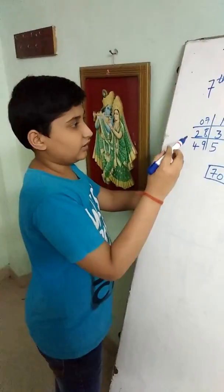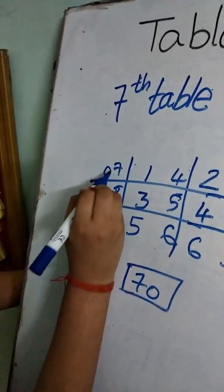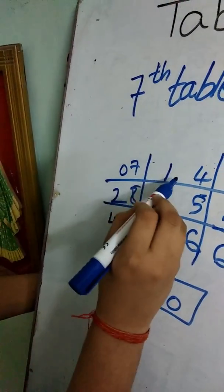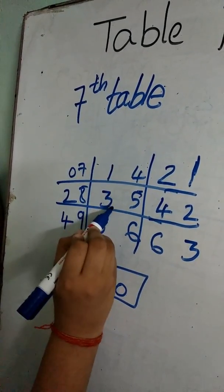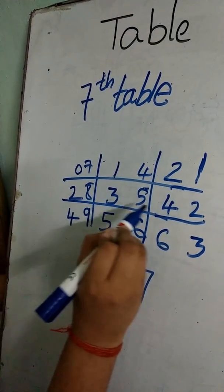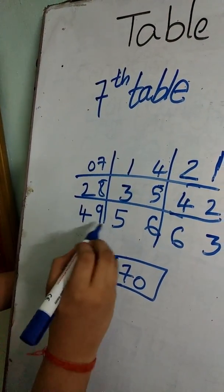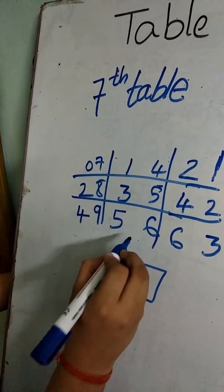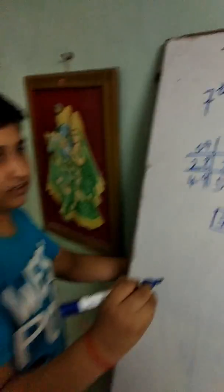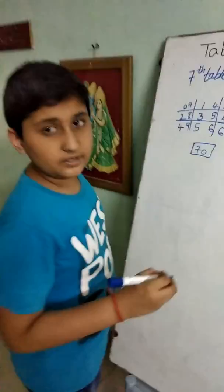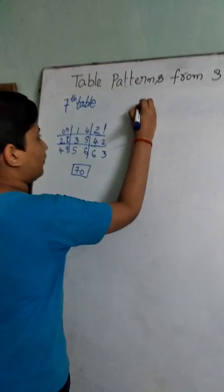This is the 7th table: 7 ones are 7, 7 twos are 14, 7 threes are 21, 7 fours are 28, 7 fives are 35, 7 sixes are 42, 7 sevens are 49, 7 eights are 56, 7 nines are 63, 7 tens are 70. Now we discuss about the 8th table.